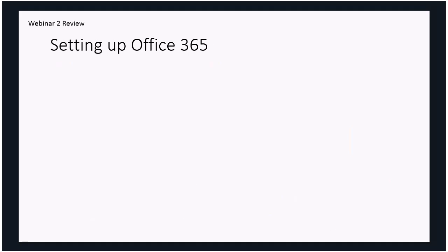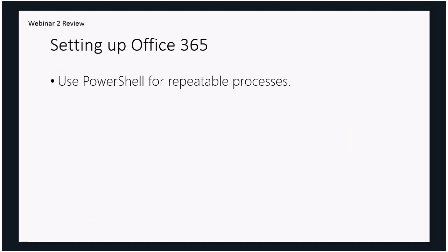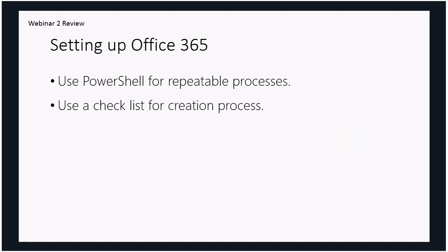Webinar two looked at setting up Office 365. We found that you really should be using PowerShell to give you a repeatable process that you can craft once and run many times against different Office 365 tenants. We should also be using a checklist — a lot of the Office 365 setup is very similar across plans. If you have a checklist to ensure you've collected all information, gathered users, picked up the right domains, and understood what the client has, you can then apply that checklist against future installations. Checklisting reduces time, saves money, and gives a consistent result.